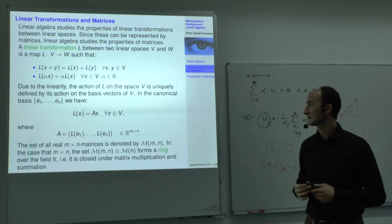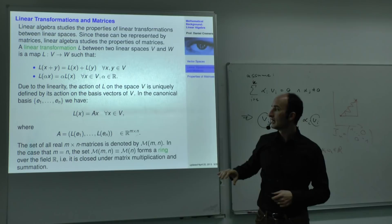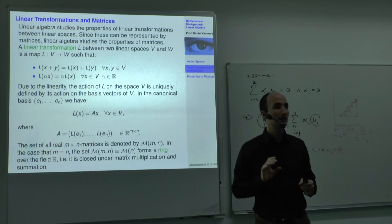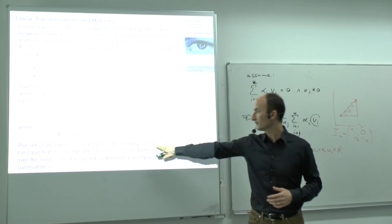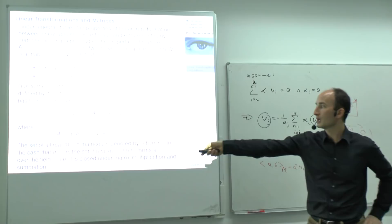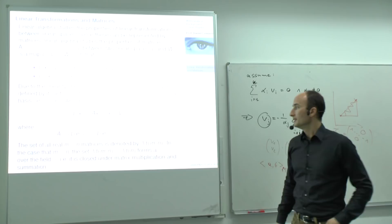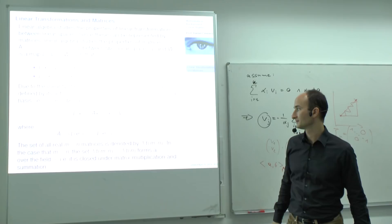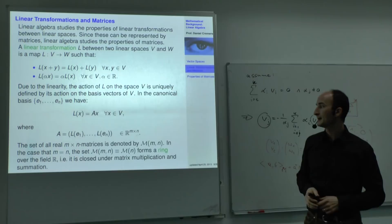Studying linear transformations is nothing but studying matrices — they are one and the same. This is why we study matrices, and why this class focuses on properties of matrices. Some notation: real M×N matrices are denoted M(M,N). If M equals N, they are square matrices, and we call this space M(N). These square matrices form a ring over the field R.